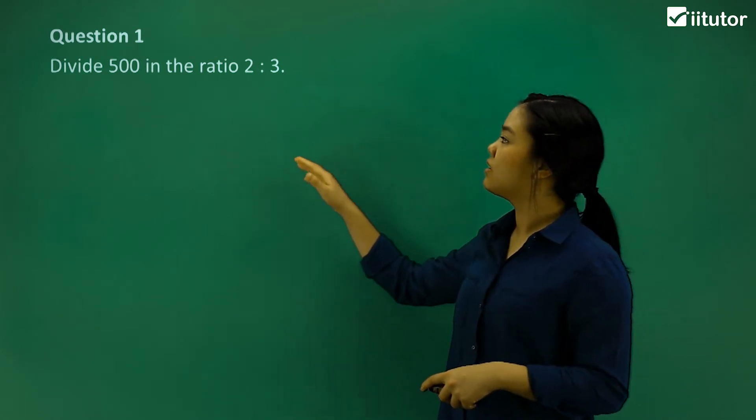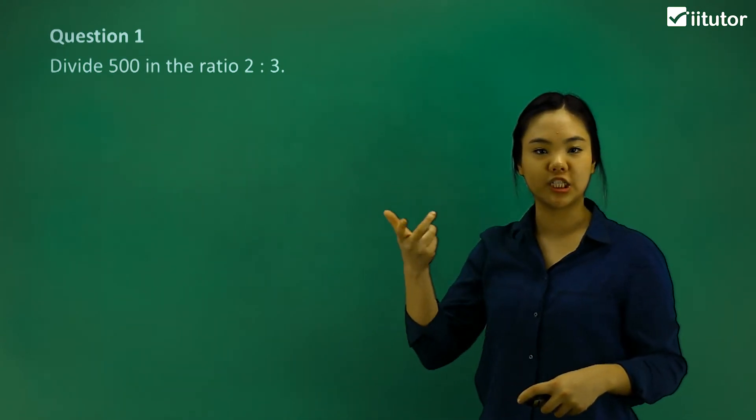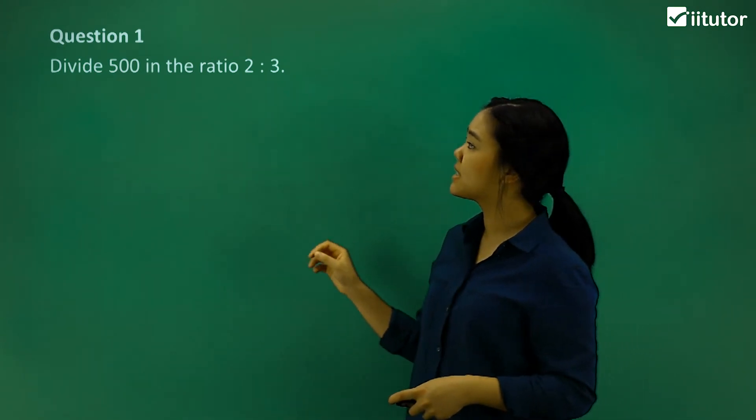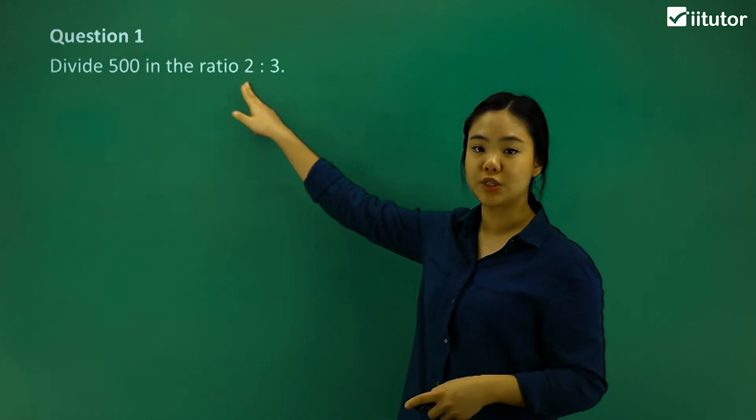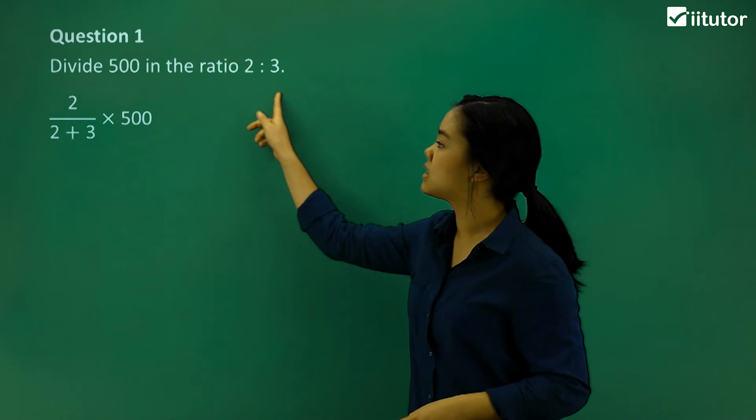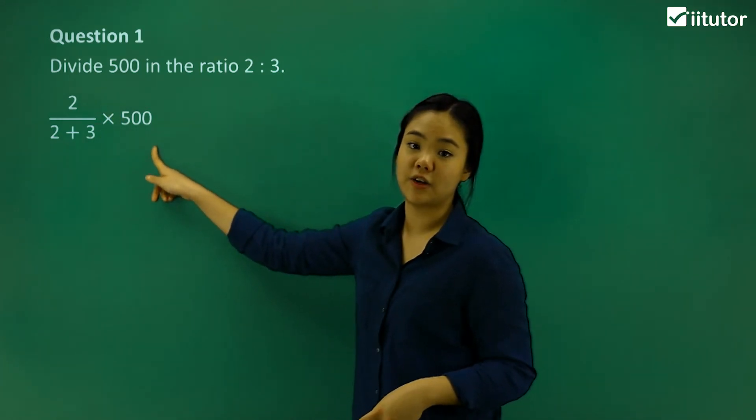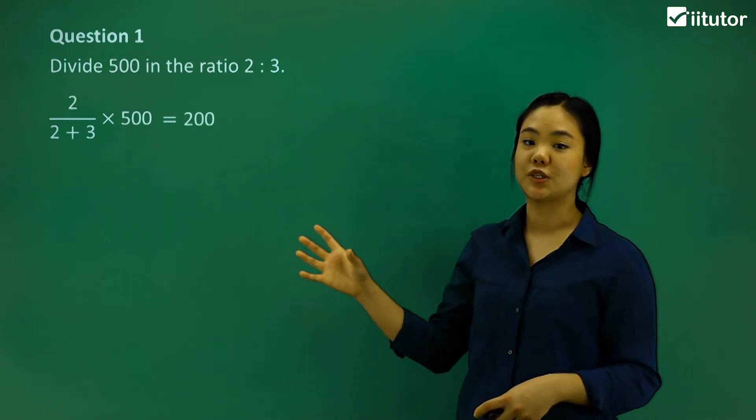So we know that 2 to 3, 2 plus 3 makes up 500, the ratio that is. So we can say for 2, it's 2 over 2 plus 3. So we just get the 2 value times 500. So the answer is 200.